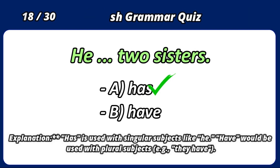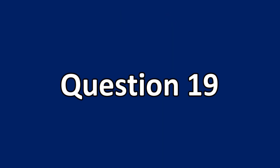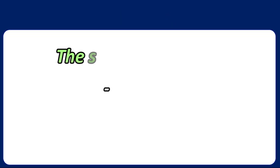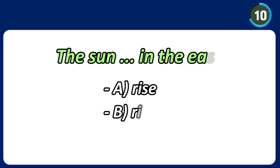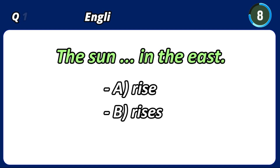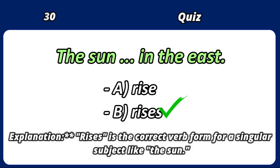Has is used with singular subjects like he. Have would be used with plural subjects. Rises is the correct verb form for a singular subject like the sun.